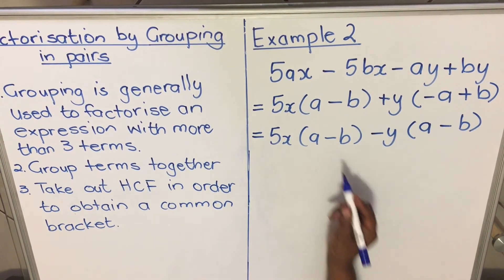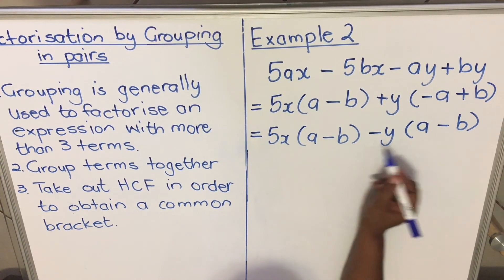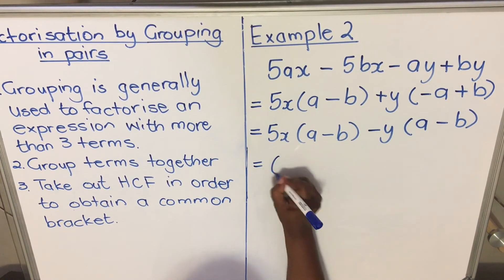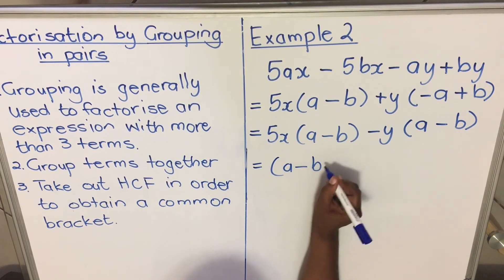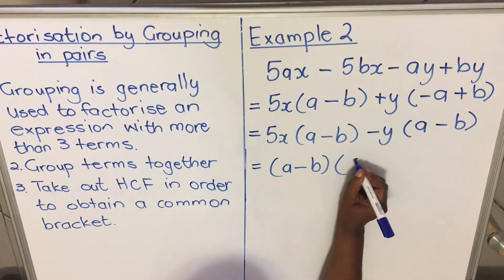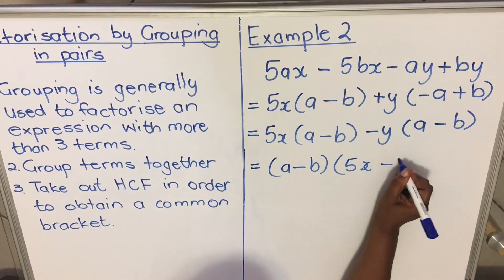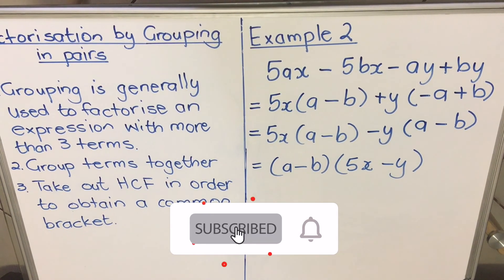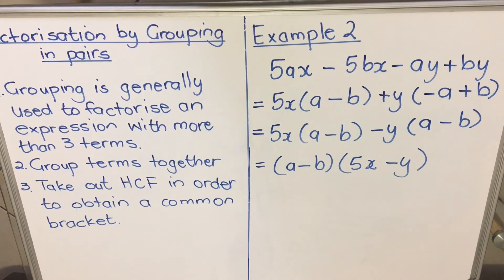Now your brackets are exactly the same, then you can take them out as a common factor: (a - b). Then we are left with (5x - y). This is how you do grouping. That's it, end of practice.